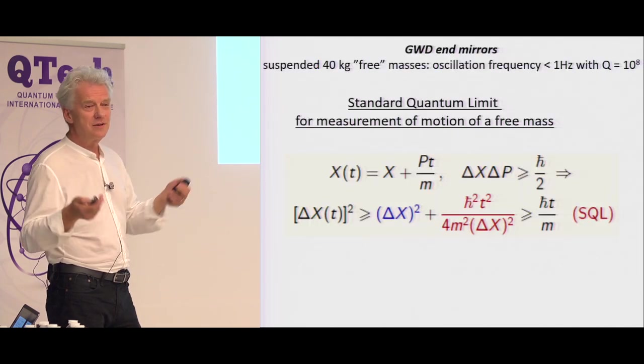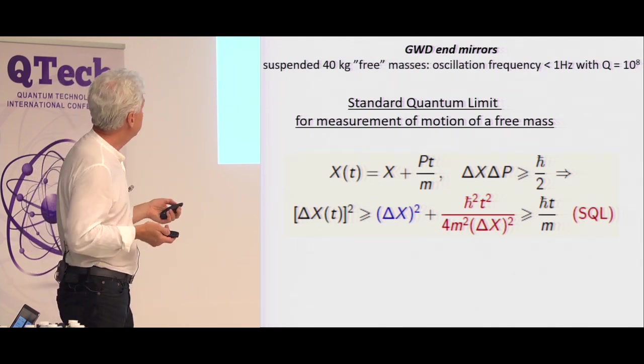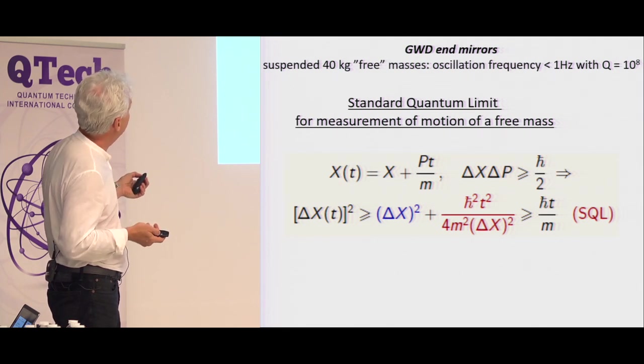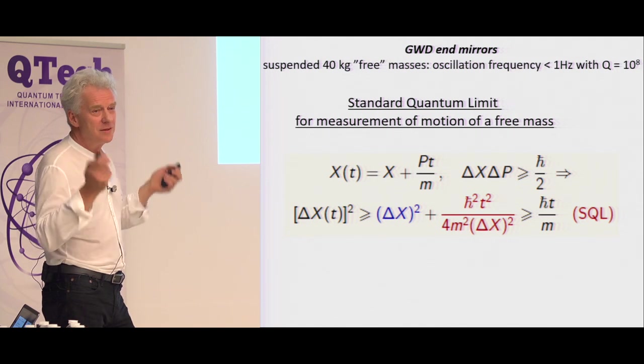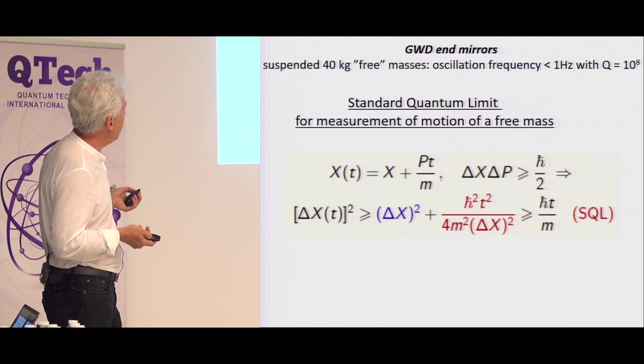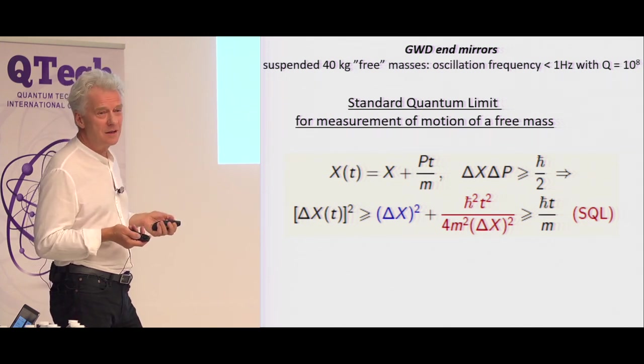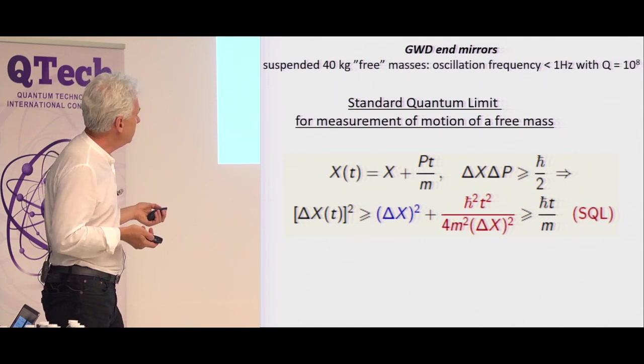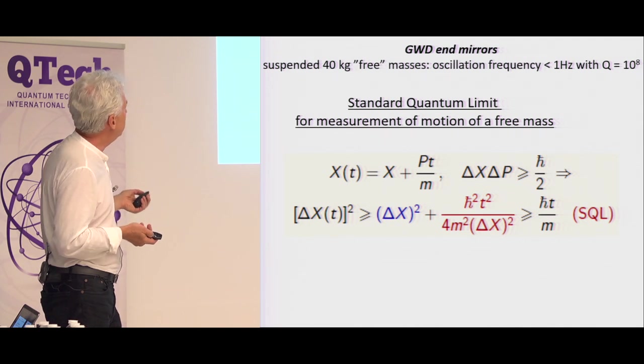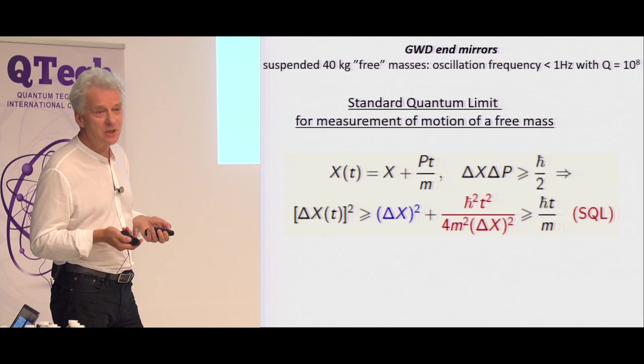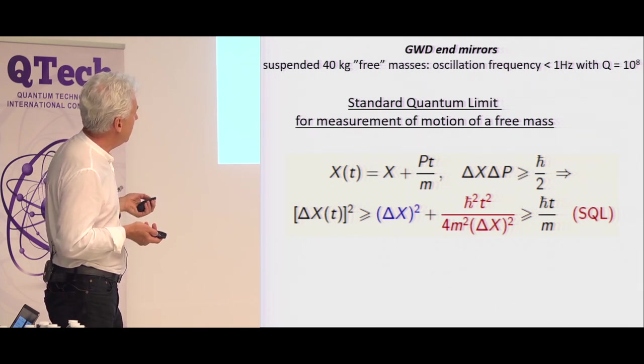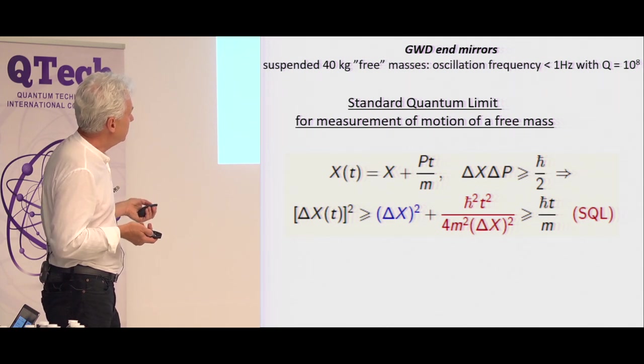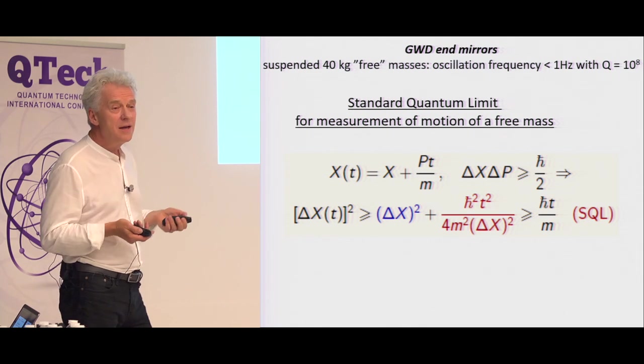So again, how does it work for the end mirrors of the gravitational wave detector? Well, it's a free mass. It's actually a 40 kilogram thing suspended, as we heard this morning, with the frequency of below a hertz, with the amazing Q factor. And the position of this free mass is, of course, given by the initial position times momentum, times t over m. Those two values obey the uncertainty principle. And from here, you can actually easily see that this sum defines you how well you can observe the position of those mirrors. And if you plug in the numbers here and use this standard quantum limit, which comes from the maximizing this equation, you get this h bar t over m. And if you plug in the numbers, you will get something like that.